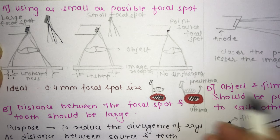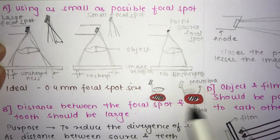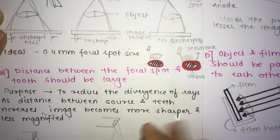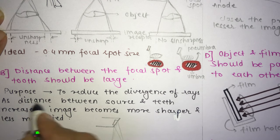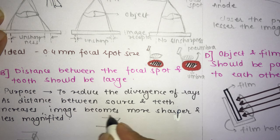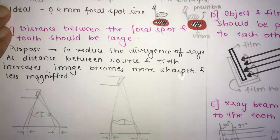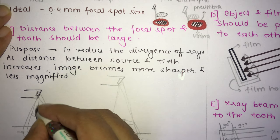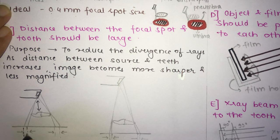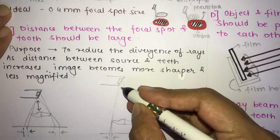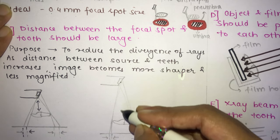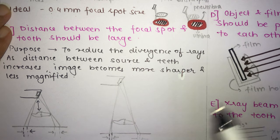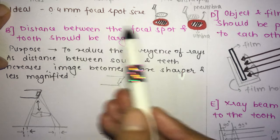The second principle is that the distance between the focal spot and the tooth should be large. The purpose is to reduce the divergence of the rays. As the source-to-tooth distance increases, the image becomes sharper and less magnified. When this distance is small, there is more unsharpness and the image is more magnified; when it is larger, there is less unsharpness because the rays are less divergent.